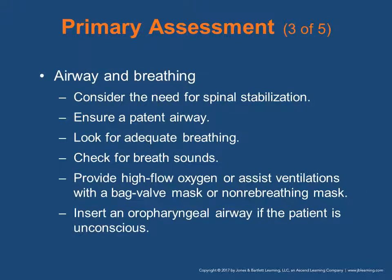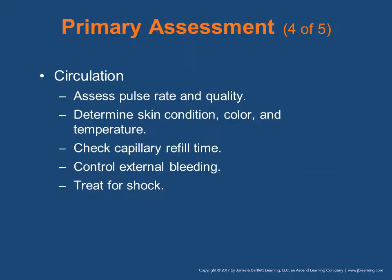Perform a rapid exam — your ABCs. Look for life threats and treat them as you find them. If the patient has obvious life-threatening external bleeding, address it first. Assess skin color and determine level of consciousness. For airway and breathing: do we need spinal stabilization? Do they have a patent airway? Look for adequate bilateral breathing, check for breath sounds, provide high-flow O2, assist ventilations with a bag valve mask or non-rebreathing mask as necessary, and insert an oropharyngeal airway if the patient is unconscious. For circulation: assess pulse rate and quality, determine skin condition, color, and temperature, check cap refill time, and control any external bleeding you see.